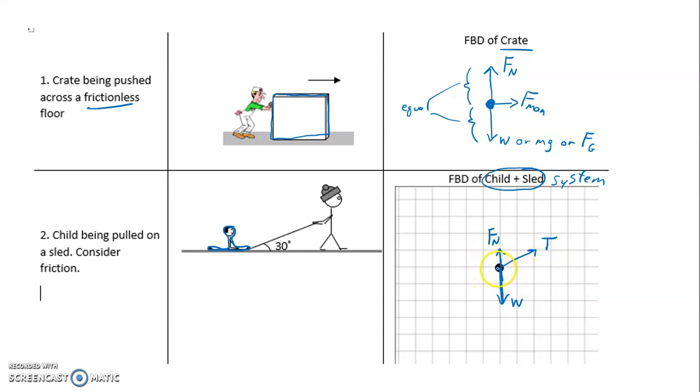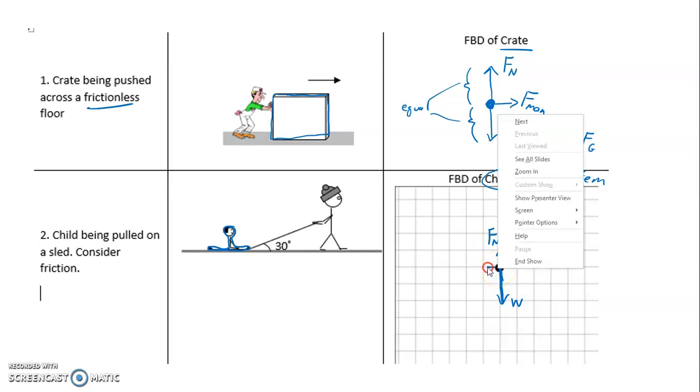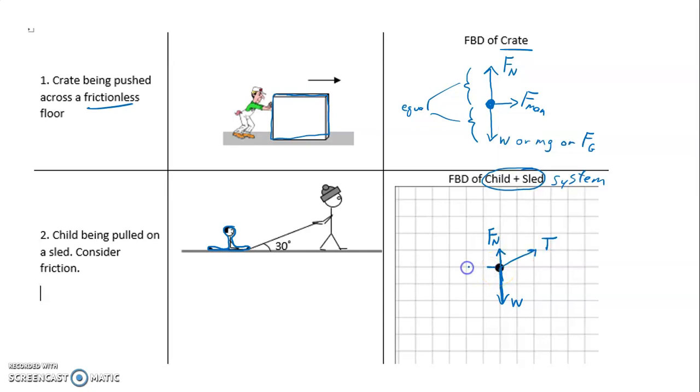And then it says do consider friction. And we're going to draw that in. And this friction would be kinetic friction because the two surfaces are sliding relative to each other.